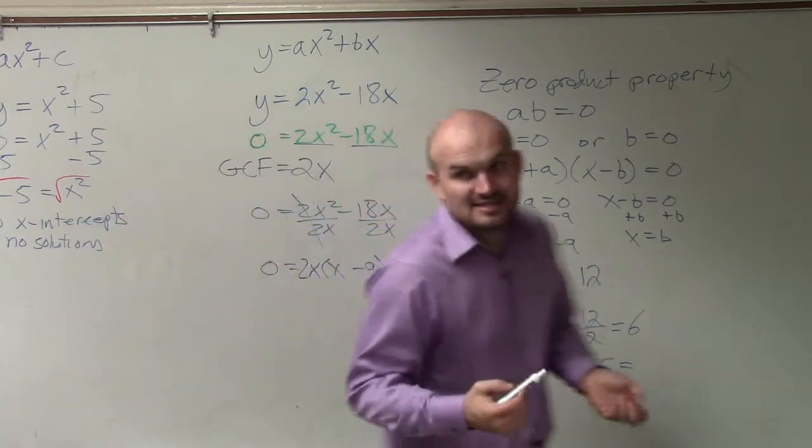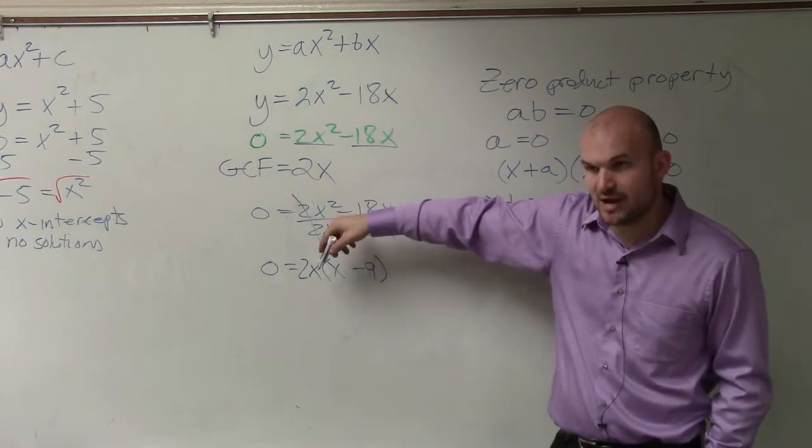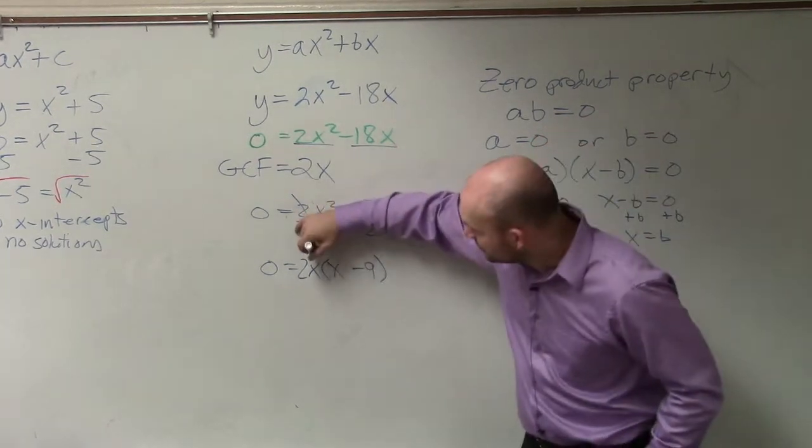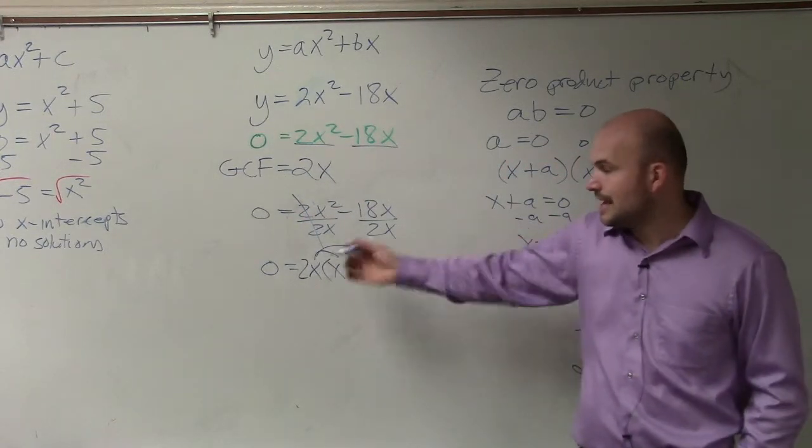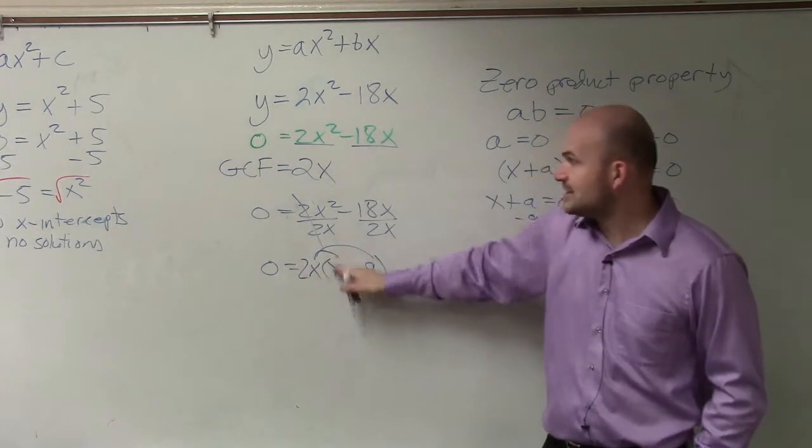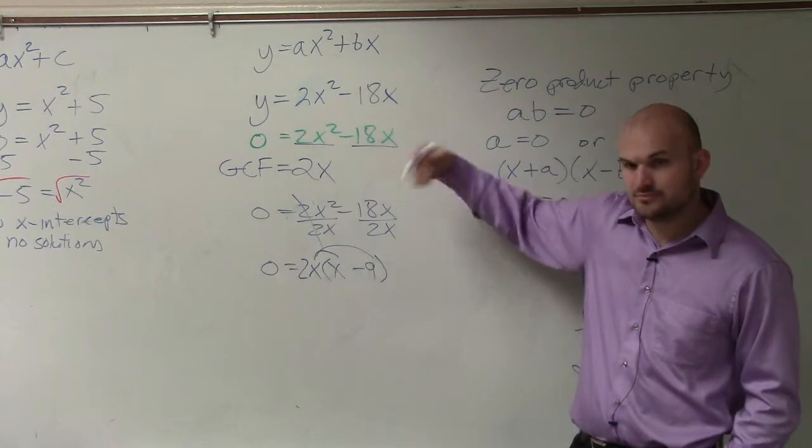Now, you guys can see, I have now rewritten this problem as a multiplication problem. And if you want to check your work to make sure you did it correctly, apply distributed property. And obviously, 2x times x is 2x squared. Nope, not yet. 2x times x is 2x squared. And 2x times negative 9 is negative 18x. So we're good there.